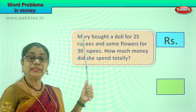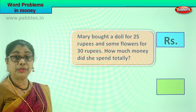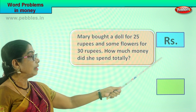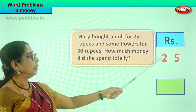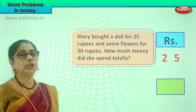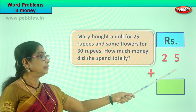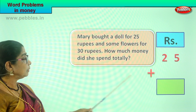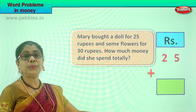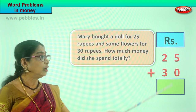Mary is going shopping with mommy. She wants one doll and some flowers. Now she has to find out the total amount for mommy, to ask mommy to pay the shopkeeper. What is the cost of a doll? Rupees 25. So we write here 2 and 5 — 25. We put it in the ones and tens column. What is the cost of the flowers? 30 rupees — plus 3 and 0, 30. That's the cost of the flowers. 25 rupees for the doll, 30 rupees for the flowers. The question is: how much money did Mary spend totally? To find out, we need to add. Only then Mary can ask mommy to pay the bill.